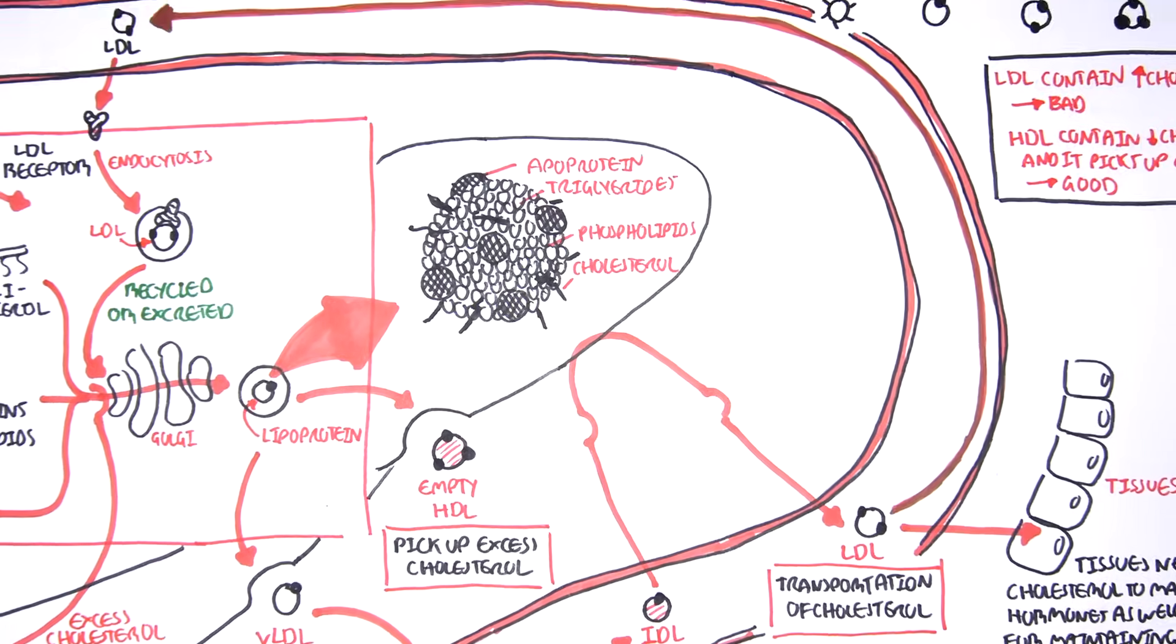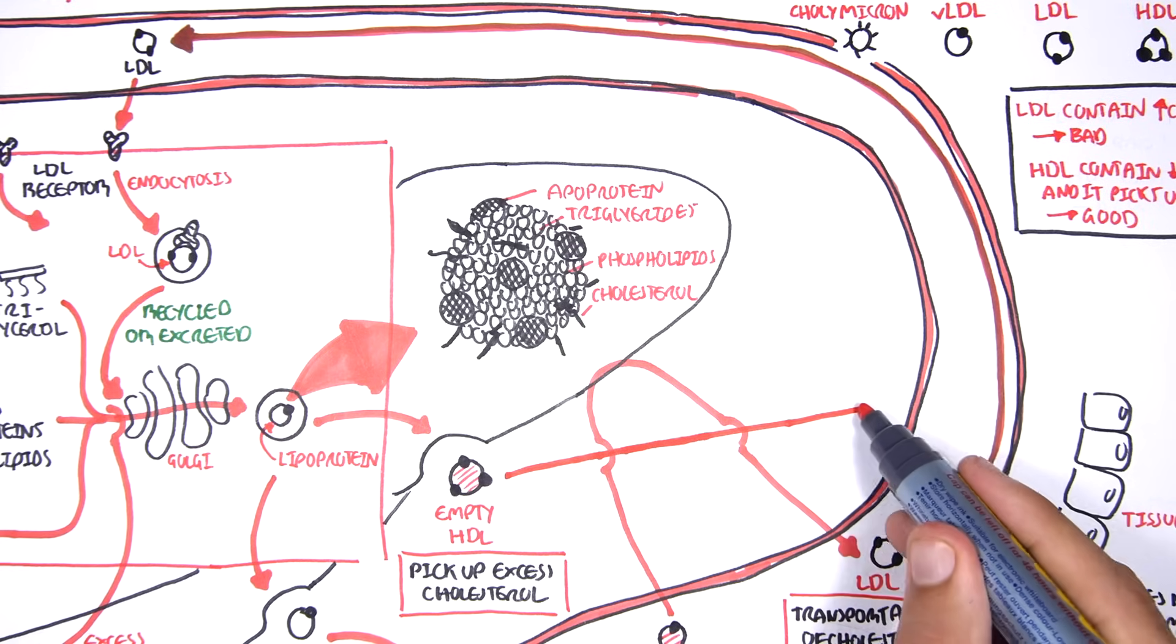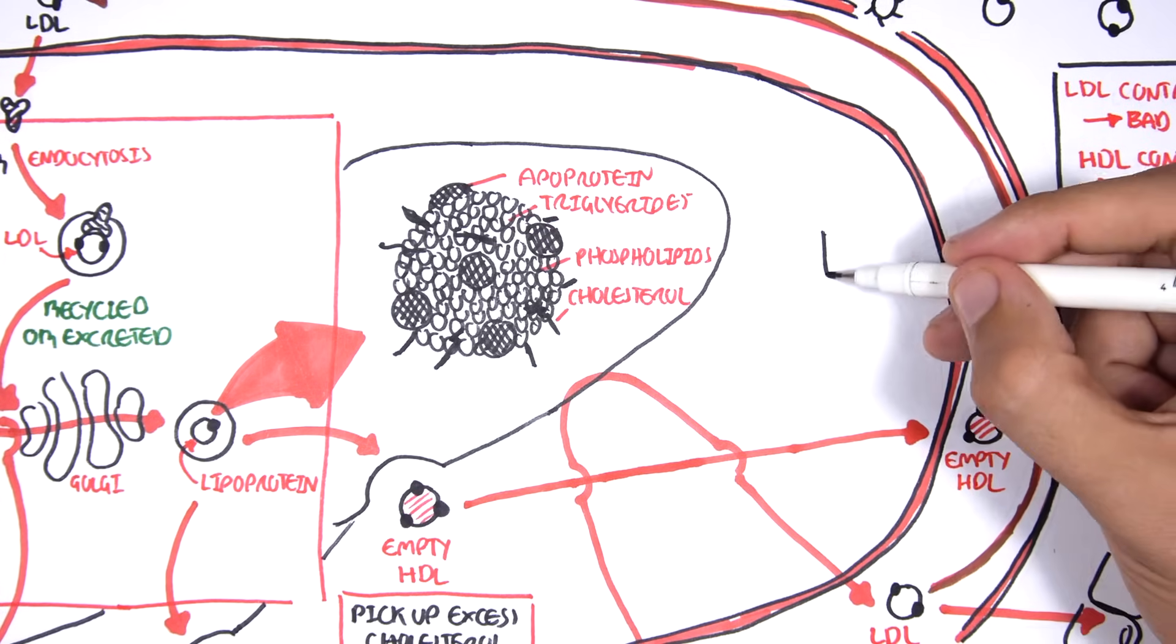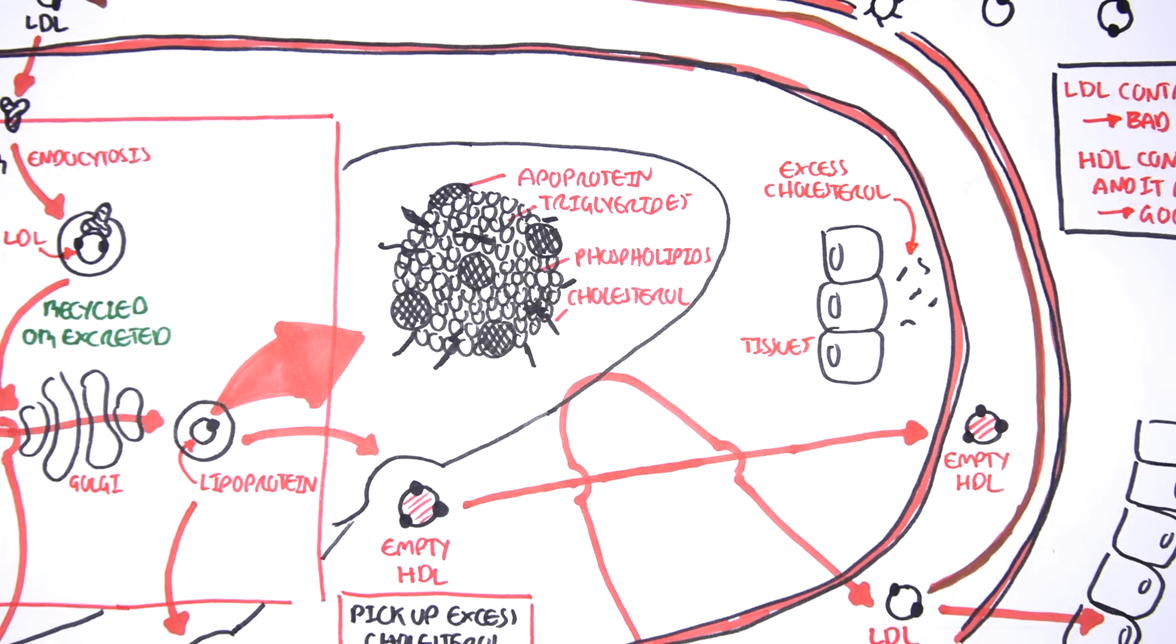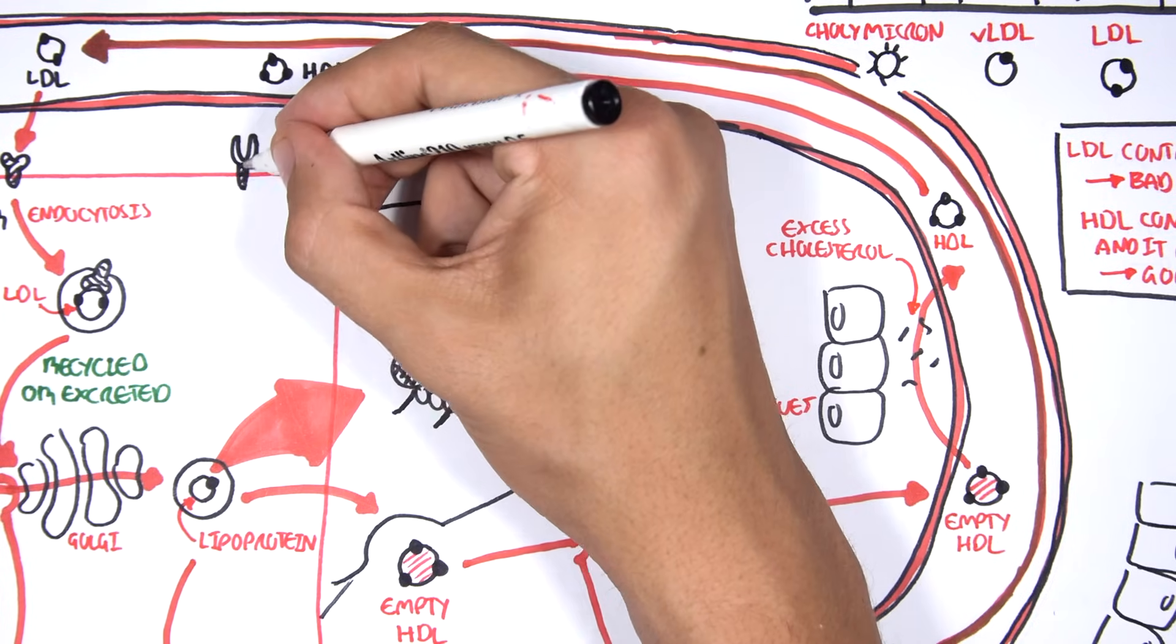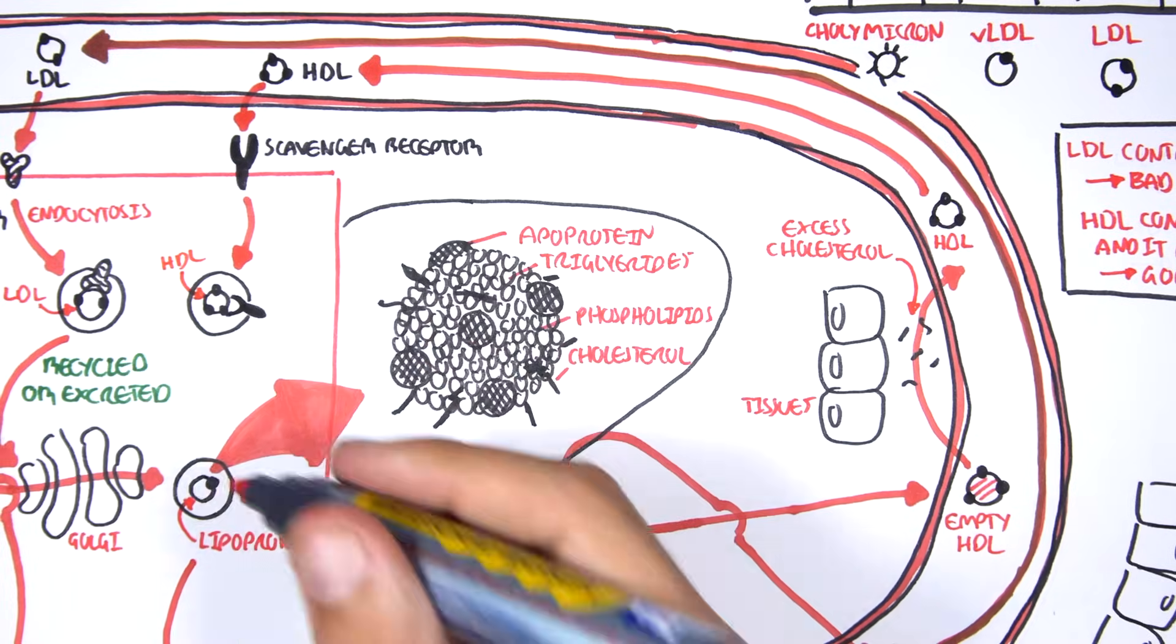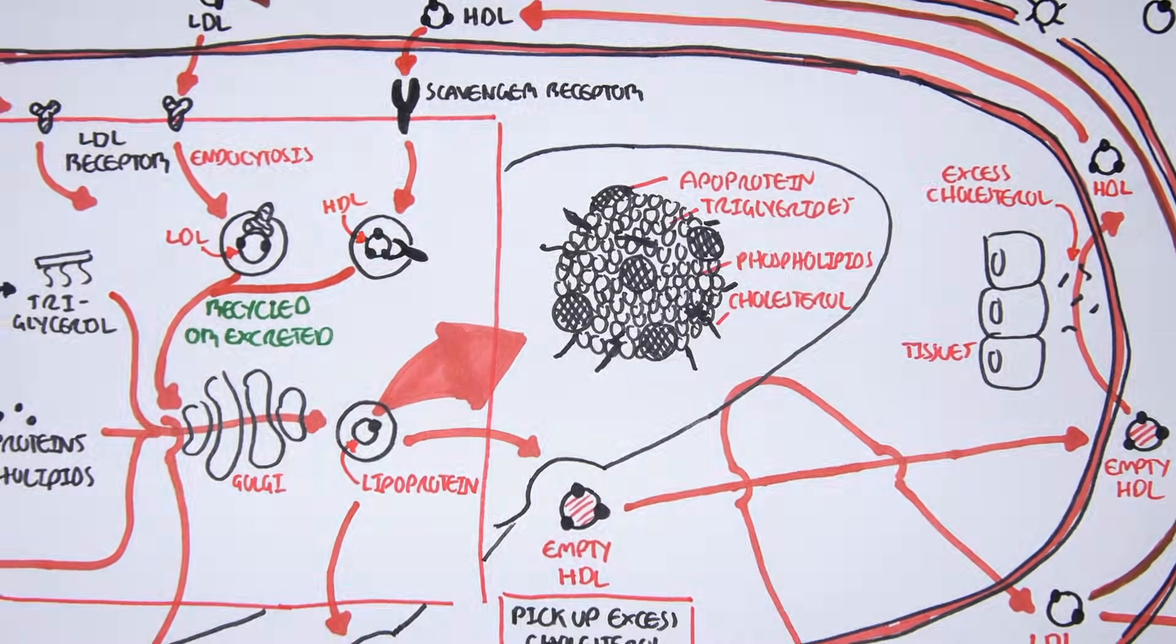Finally, we go to our last lipoprotein, HDL. The empty HDL's main function is to pick up excess cholesterol. It enters the circulation and picks up excess cholesterol from tissues and cells. The full HDL with cholesterol will bind onto scavenger receptors on the hepatocytes and gets endocytosed. The HDL can then either be recycled through the Golgi or excreted depending on how much cholesterol the body needs.